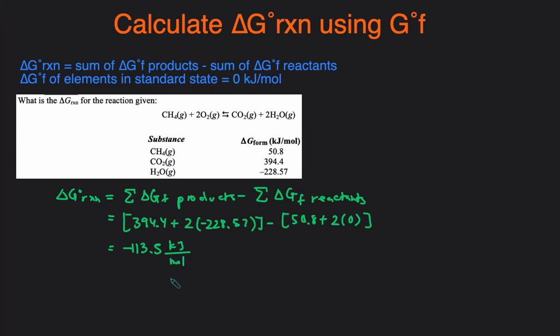And that's how you calculate the delta G of a reaction by using Gibbs formation. Just do products minus the reactants. Just look up the values of all the reactants and products, and if there's an element that's missing then check if that element's in the standard state, because if it is it'll just be zero kilojoules per mole.